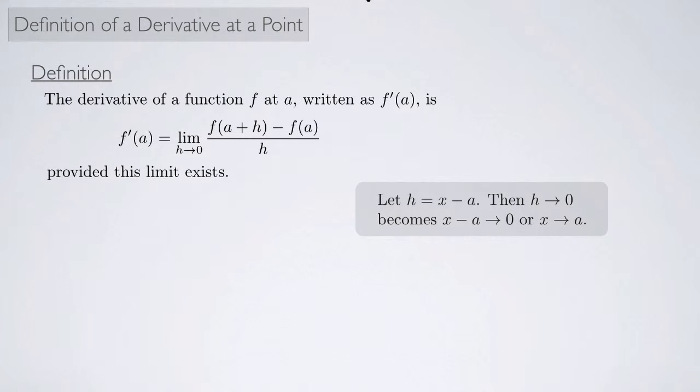And so we can also get the alternate definition. Remember we had another way of defining the slope of the secant line by letting h equal x minus a. Then as h goes to zero, that would become x minus a goes to zero. Or another way of saying that x minus a goes to zero is saying that x approaches a. So if you plug all that in, you get the alternate expression, which says that f prime of a is equal to the limit as x approaches a of f of x minus f of a divided by x minus a.